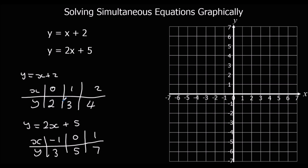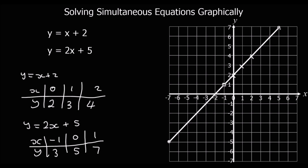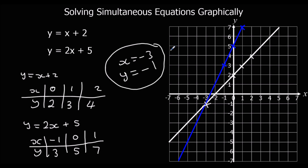So I'm going to draw the two graphs now. The first one: points (0,2), (1,3), and (2,4) — draw a line through those points and extend it all the way across the graph. Then the second graph using points (minus 1, 3), (0, 5), and (1, 7) — draw that line all the way through. The solution to the simultaneous equations is where the two lines meet: x is minus 3 and y equals minus 1.